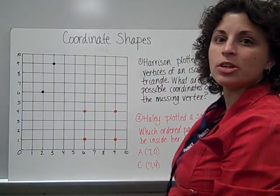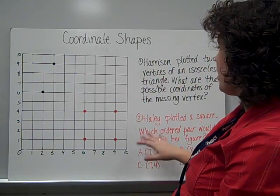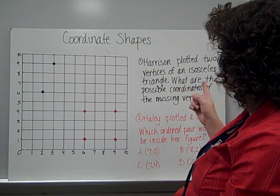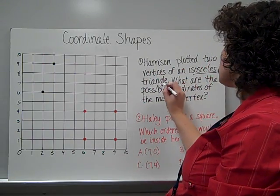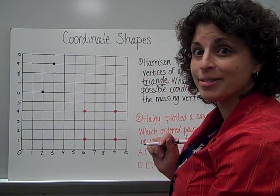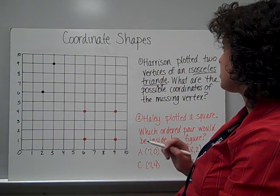All right. The last type of question we're going to see is about some coordinate shapes. And I have two different questions here. First one, Harrison plotted two vertices of an isosceles triangle. Remember what that is? What are the possible coordinates of the missing vertex?